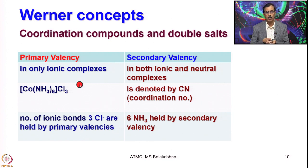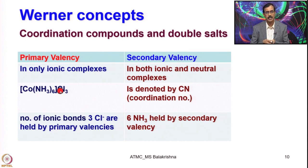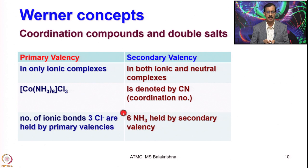What is primary valency? In ionic complexes you can see primary valency, but secondary valency is seen in both ionic and neutral complexes. For example, in hexaminecobalt(III) chloride, the 6 ammonia inside the coordination sphere denote the secondary valency or coordination number of 6. The 3 Cl⁻ outside the bracket as counter anions are held by primary valency — they are involved in ionic bonding with cobalt — whereas the ammonia inside the coordination sphere are involved in covalent bonding and held by secondary valency.